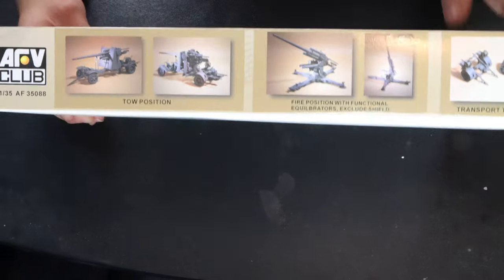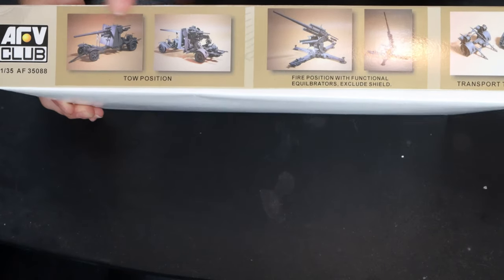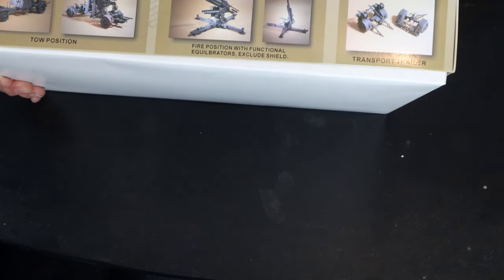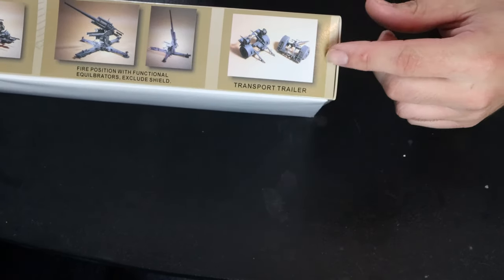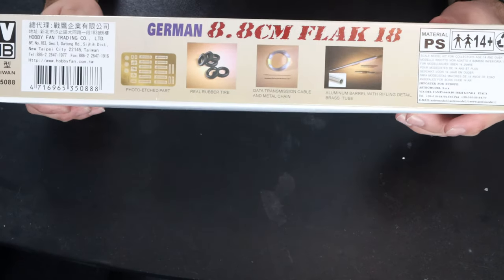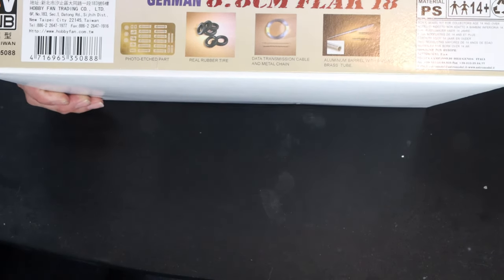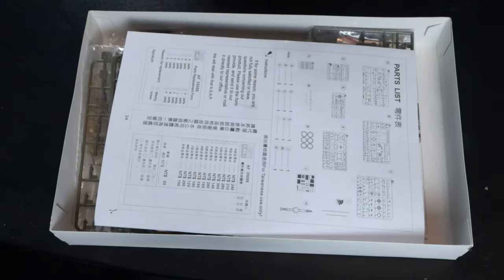Take a look at the side here. They show it in the tow position and the firing position, as well as the transport trailer. On the other side they show you a few details of the kit: the photo-etch, the tires, some of the wire and stuff like that. So I guess let's dig into the box.